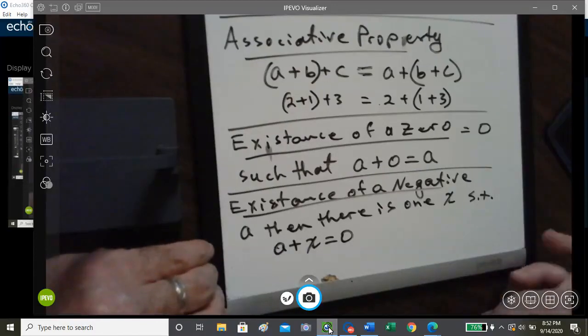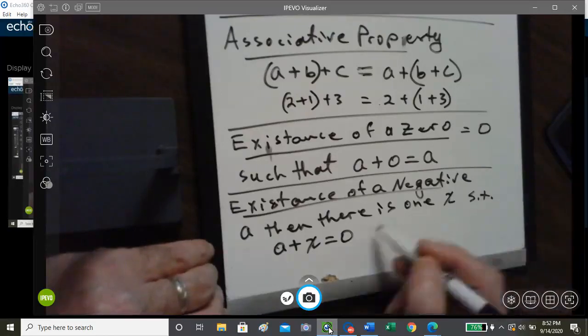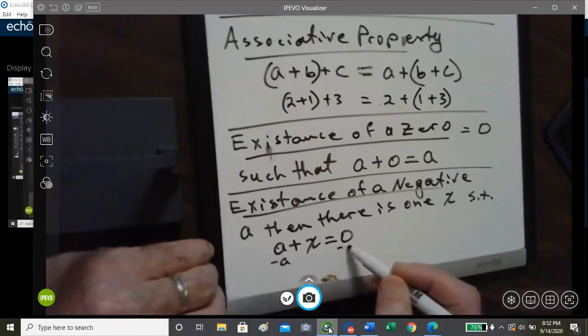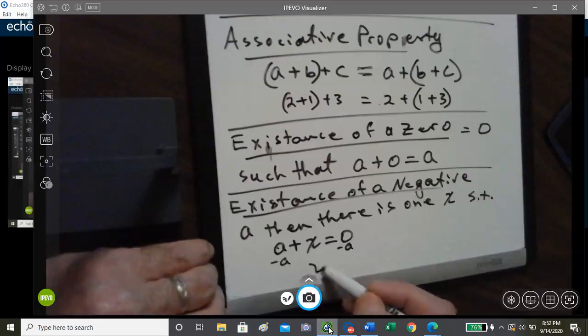So, this number is called the negative of A, and it's denoted by negative A. So in other words, if we subtracted A from both sides, then we get X is equal to negative A.